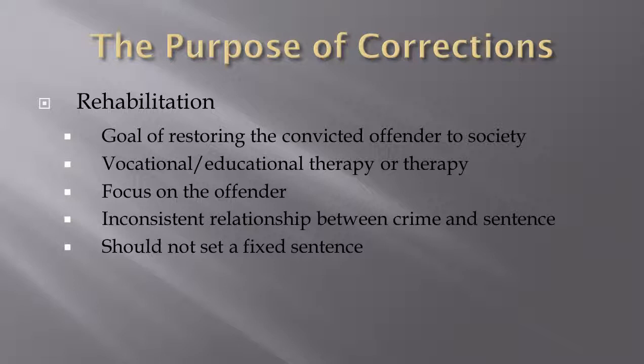Rehabilitation is now at the core of most corrections systems across the country. We've realized that we can't build prisons as a primary public policy — it's just not sustainable. The economic crisis of 2009 created a clear vision for local, state, and federal systems that we cannot afford to sustain an incarcerated-first mentality. We have to think differently and smarter. The goal is to restore that person to society in a way that they're better suited and prepared to engage in a pro-social life. Most of that is focused around vocational education and treatment options.